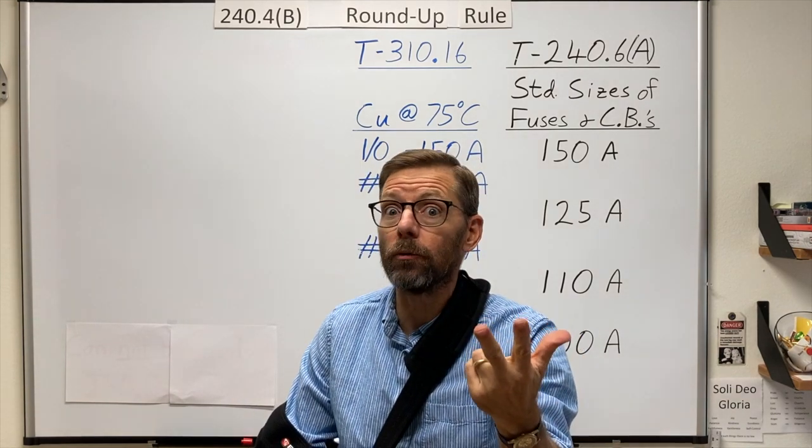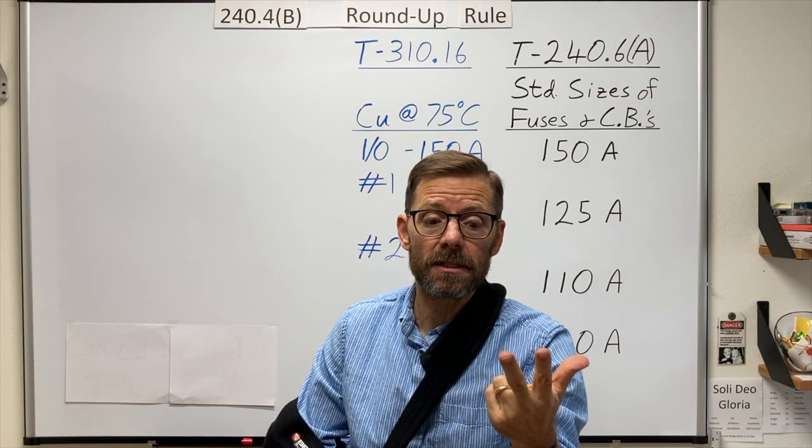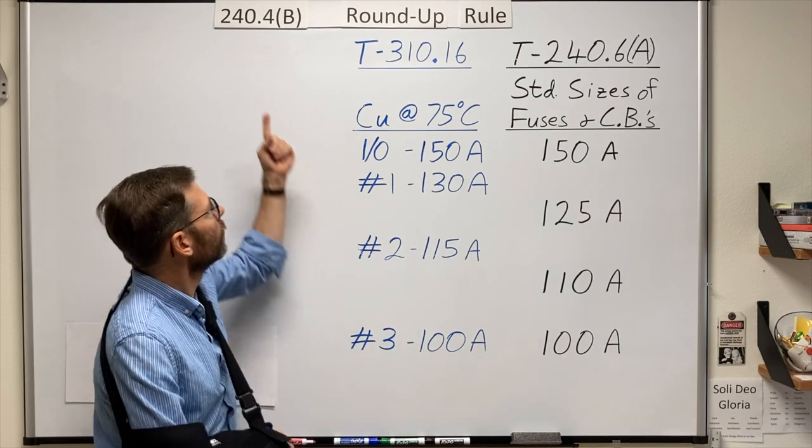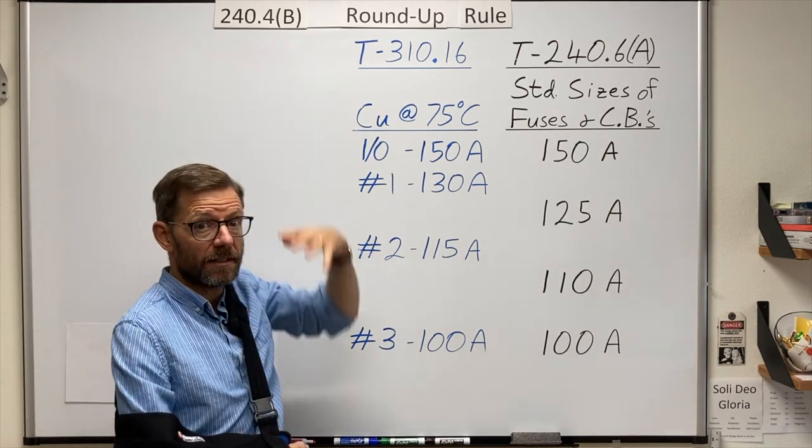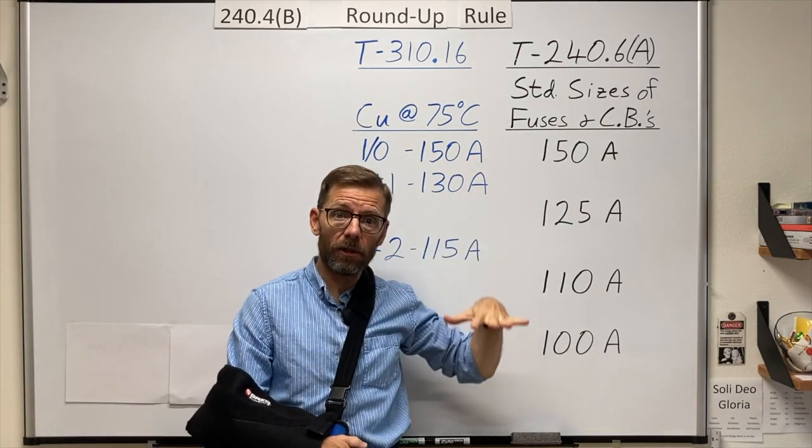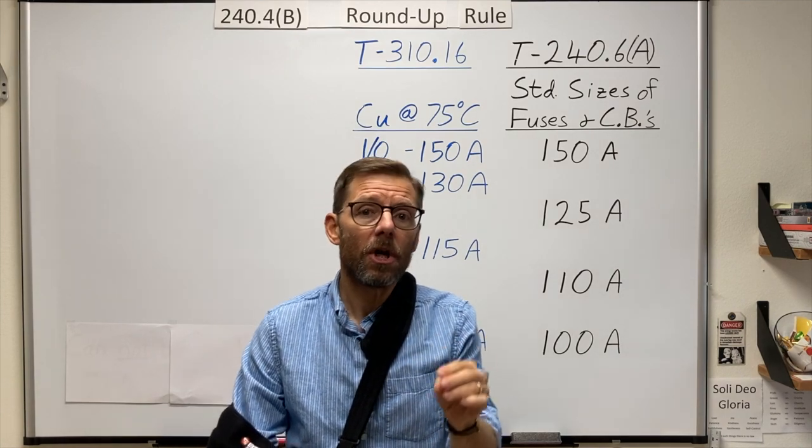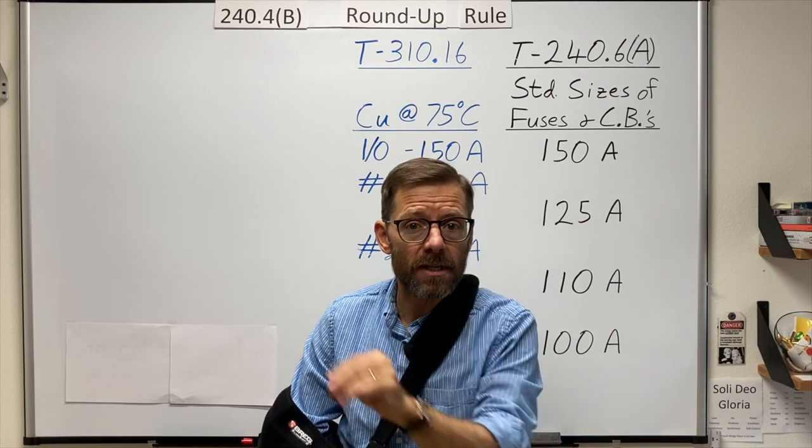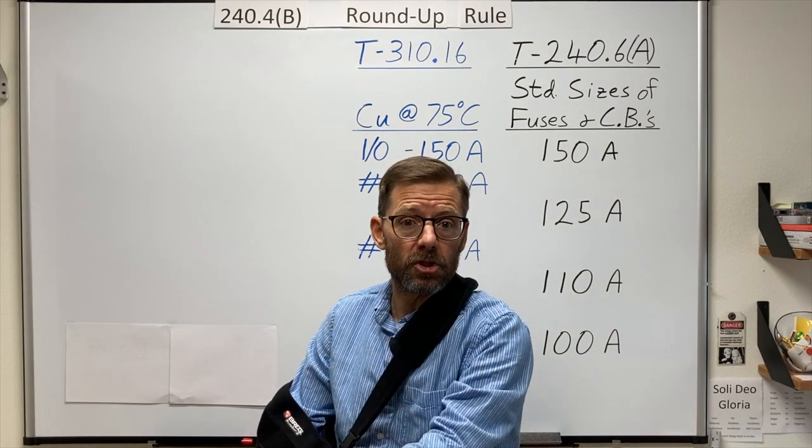connecting to something that's only rated for 60 degrees Celsius, or if you're using small conductors. 240.4d, D as in Dave, for small conductors, has specific restrictions on the size of overcurrent devices for wire sizes number 10 and smaller.